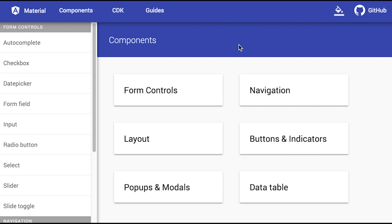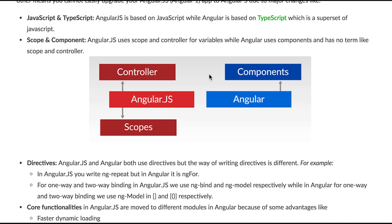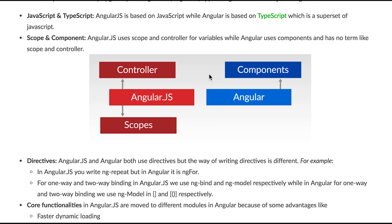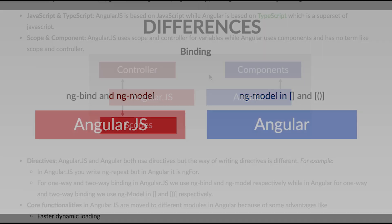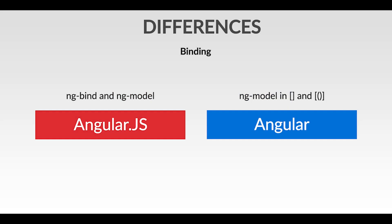The next difference is directives. We write directives a little differently in the newer version of Angular. In AngularJS we write two-way binding like ng-model, but in Angular we write it using square brackets and parentheses.